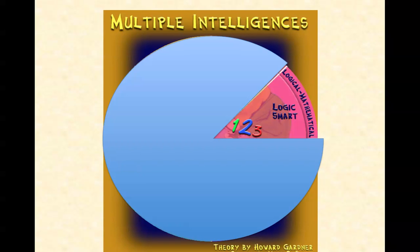The first intelligence is logical-mathematical, having to do with reasoning and calculating. You will think conceptually and abstractly, and are able to see and explore patterns and relationships. People with a strong logical-mathematical intelligence like to experiment, solve puzzles, and ask cosmic questions. They can be taught through logic games, investigations, and mysteries, and they need to form concepts before dealing with details — they need to see the big picture.